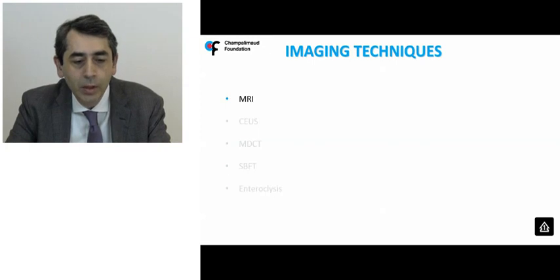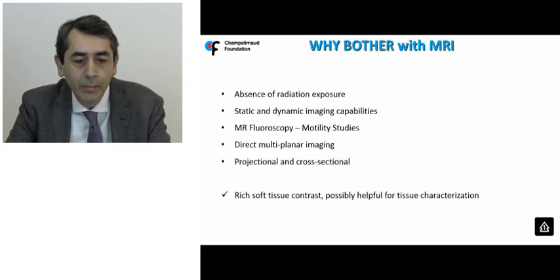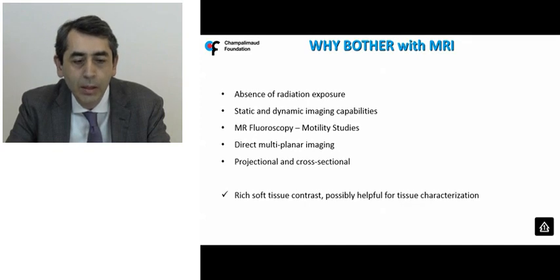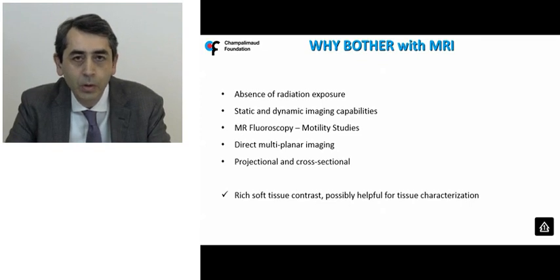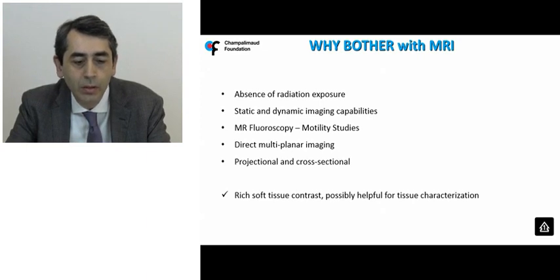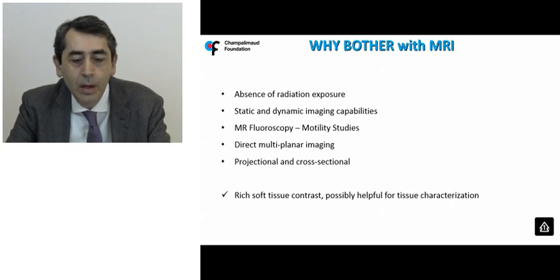Due to time constraints, we will focus mainly on MRI, because MRI has certain qualities for small bowel imaging. First of all, there is no radiation exposure involved. MRI provides both static and dynamic imaging capabilities. It's possible to do fluoroscopic studies and motility studies. It possesses direct multi-planar imaging capabilities, both projectional and cross-sectional fashion. And at the top of all these, the multiple contrast mechanisms available may aid accurate tissue characterization.